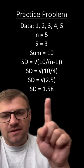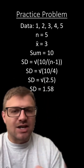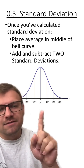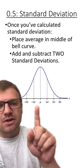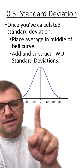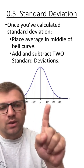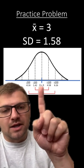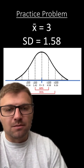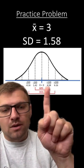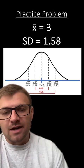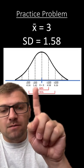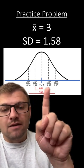So what do we do with this standard deviation of 1.58? Once you've calculated standard deviation, you place the average in the middle of the bell curve and add and subtract that standard deviation to figure out where those points are on the graph. In our bell curve, the average is in the middle, which is three. Our standard deviation is 1.58, so we add 1.58 and subtract 1.58 from the average. So 68% of our data should fall between 1.42 and 4.58.